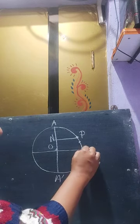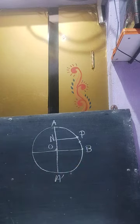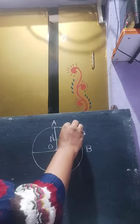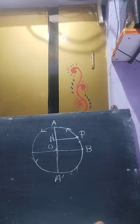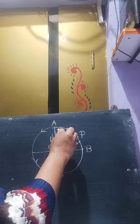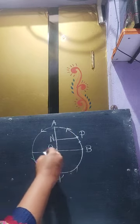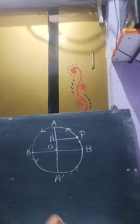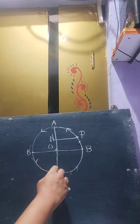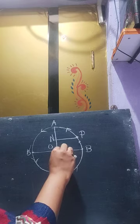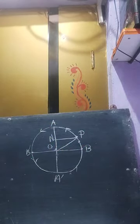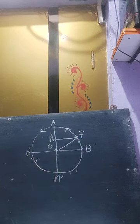When the particle was at position B, the projection was at point O. When the particle moving along the circumference reaches position A, the projection moving along the diameter also reaches A. When the particle reaches point B', the projection moves from A to A'.